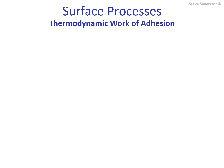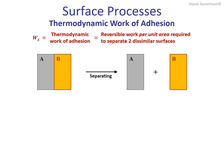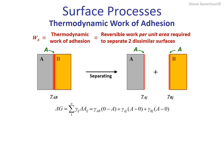A good starting point is the thermodynamic work of adhesion — the reversible work per unit area required to separate two dissimilar surfaces. The process involves separation of an interface to produce two surfaces. Under constant temperature and pressure conditions, the change in Gibbs free energy is obtained by summing the products of the surface energies multiplied by the changes in surface areas resulting from the process. By multiplying both sides by the inverse of the area, we obtain the thermodynamic work of adhesion, W_A. The final term on the right-hand side can be estimated using the equation developed for approximating interfacial energy.